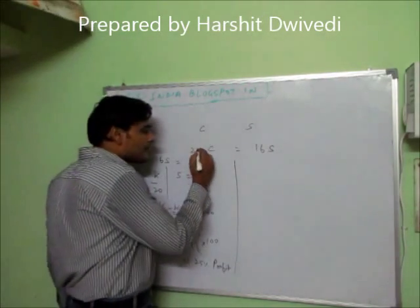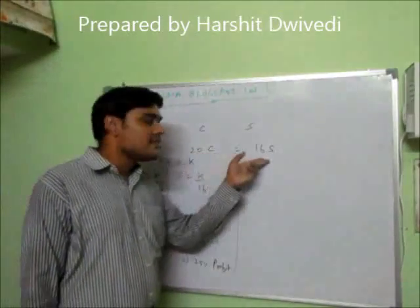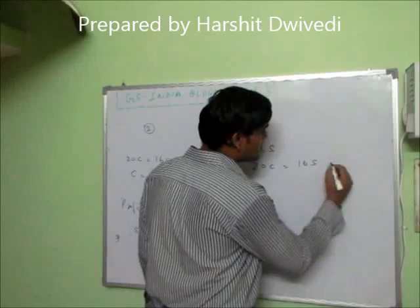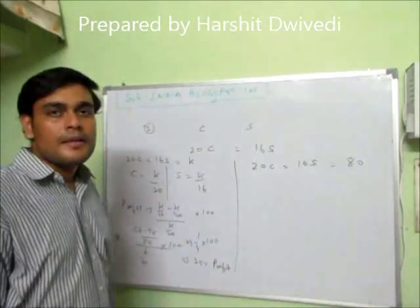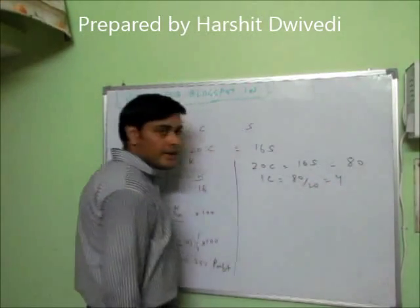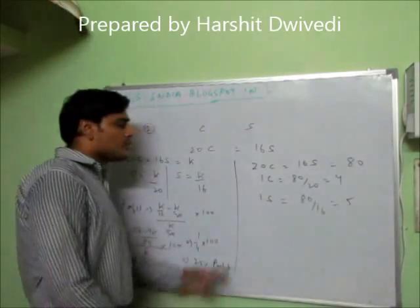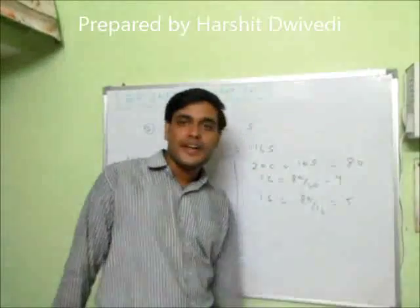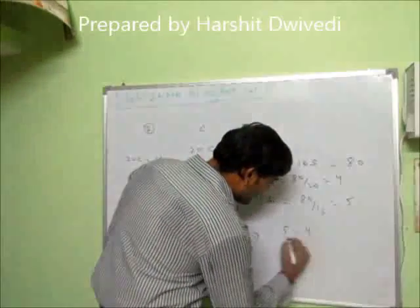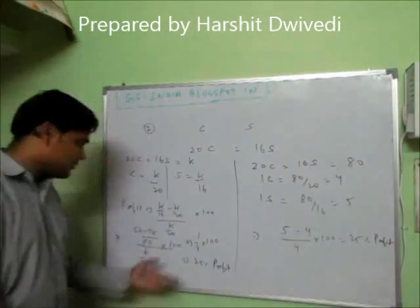Now let us use the shorter method. Cost price of 20 equals selling price of 16. I am going to take the LCM of 20 and 16, which is 80. I assume that 20C equals 16S equals rupees 80. By assuming this, the cost price of 1 article equals 80 by 20, that is 4. And the selling price of 1 article equals 80 by 16, that is rupees 5. So profit percentage is: 5 minus 4 upon 4 into 100, which becomes 25% profit. Same answer. This is the shorter method — it takes not more than 20 seconds.